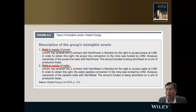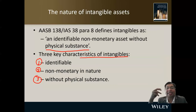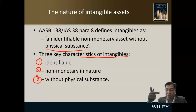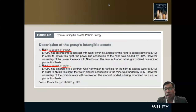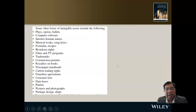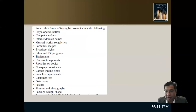The right to supply power or water qualifies as an intangible asset because it meets all three characteristics: it is identifiable — you can identify this specific right; it is non-monetary — it is not cash; and it lacks physical substance. We still need to check the recognition criteria before recording it as an asset.